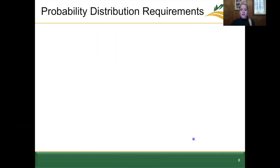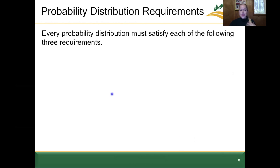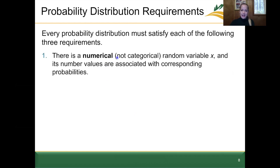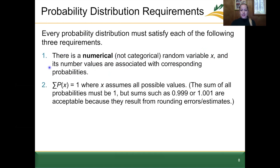Next, we're going to go through the probability distribution requirements, which are important in verifying whether we have a probability distribution. Every probability distribution must satisfy each of three requirements. The first is there is a numerical, not categorical, random variable x, and its values are associated with a corresponding probability. The second requirement is that the summation of all the probabilities of x is equal to one. We're used to dealing with probabilities this way — they have to add up to one, just as two complements had to add up to one.